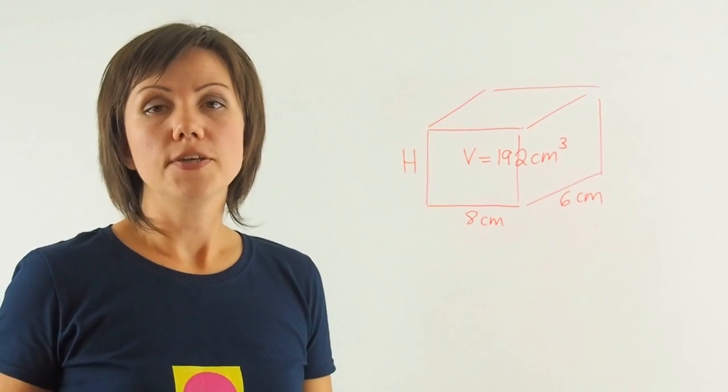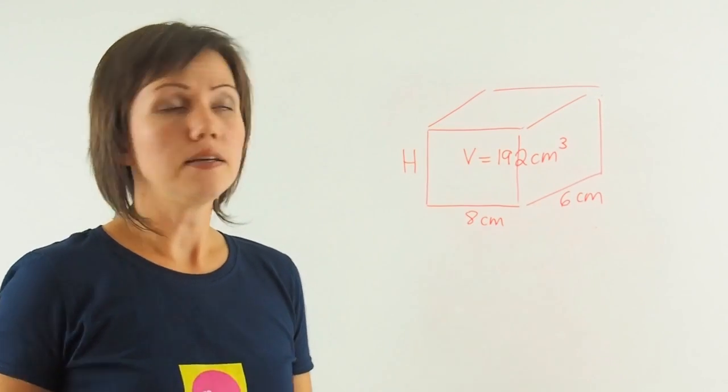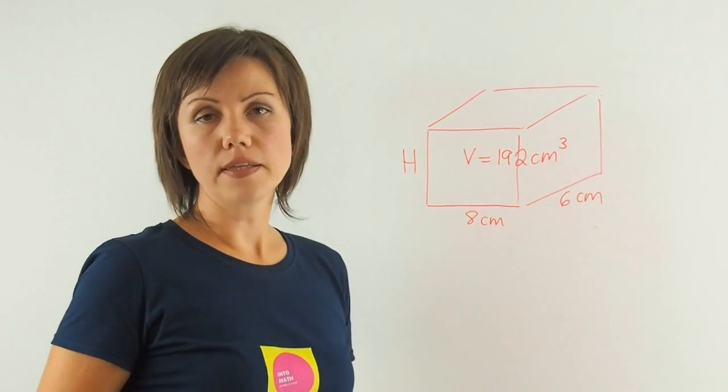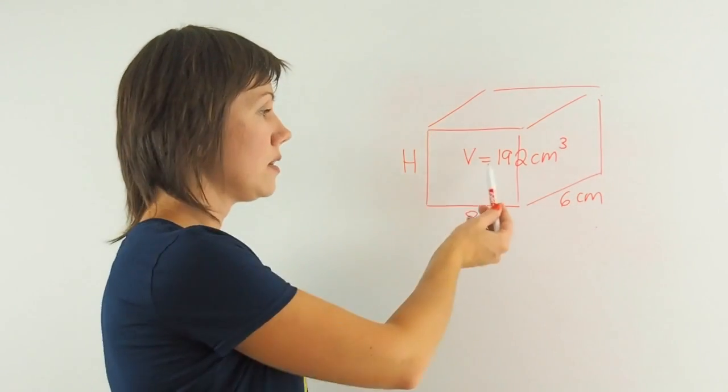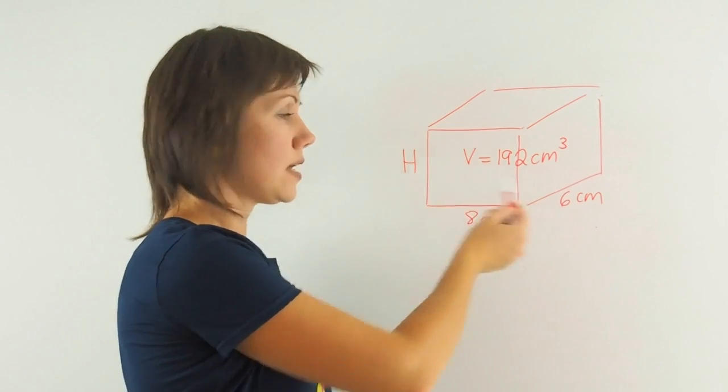In this problem you're being asked to find the height of a rectangular prism given the volume, the width, and the length.